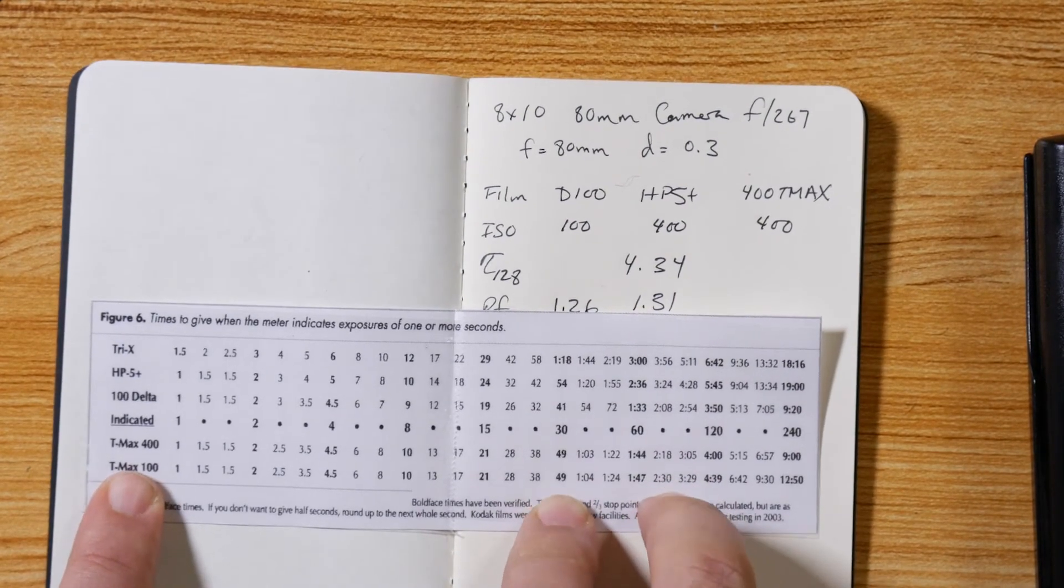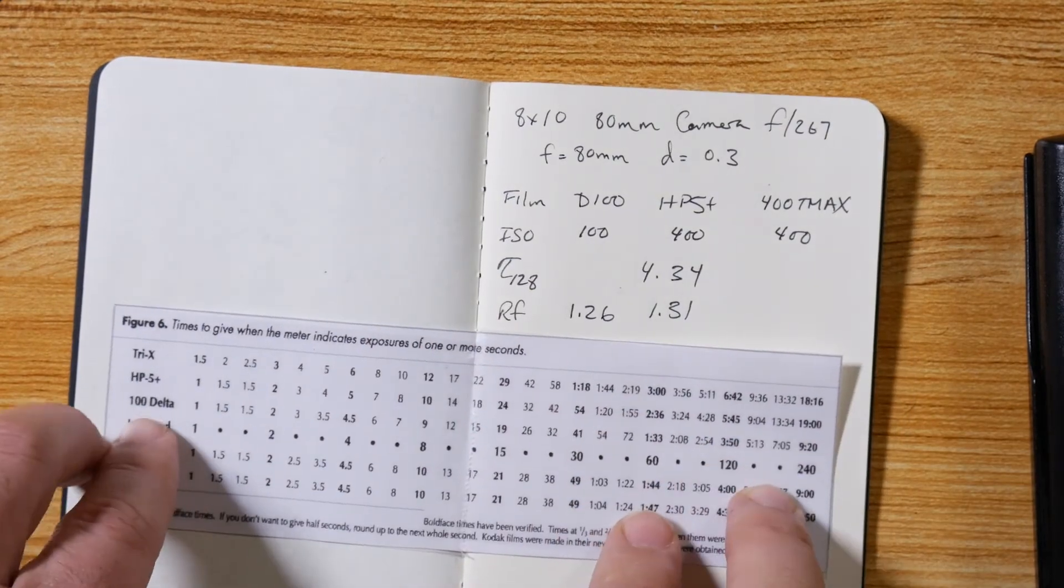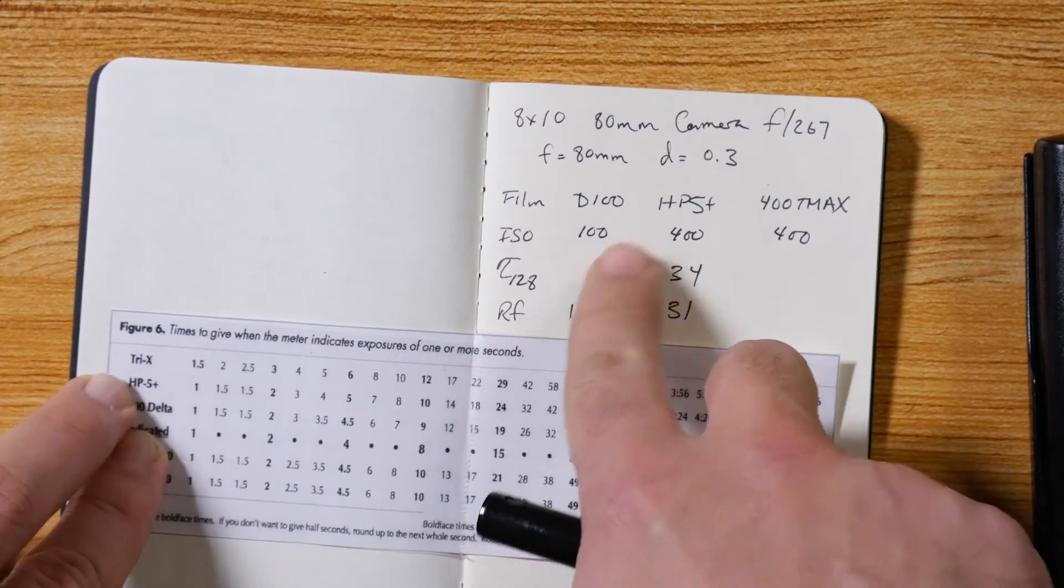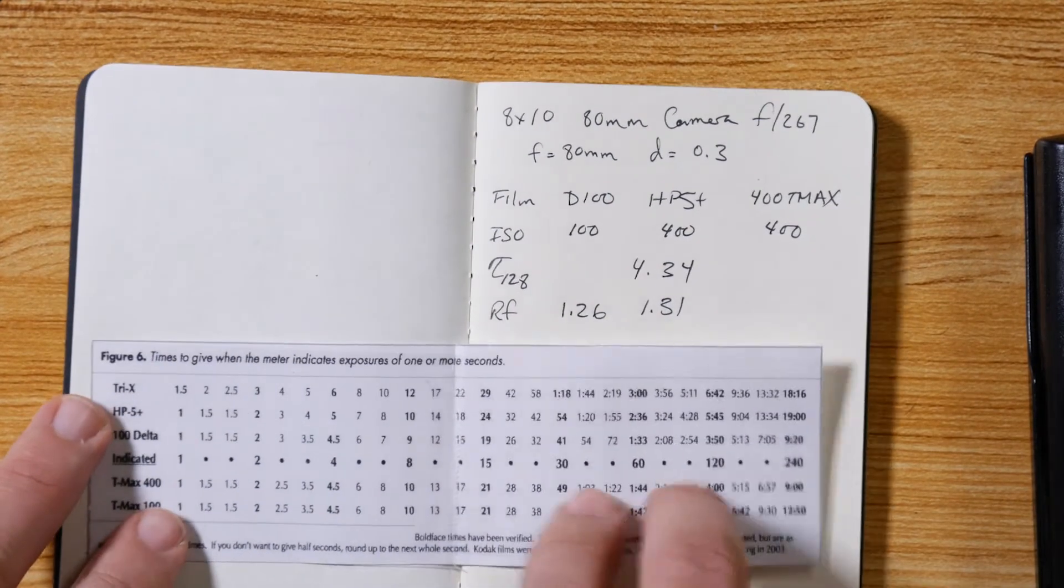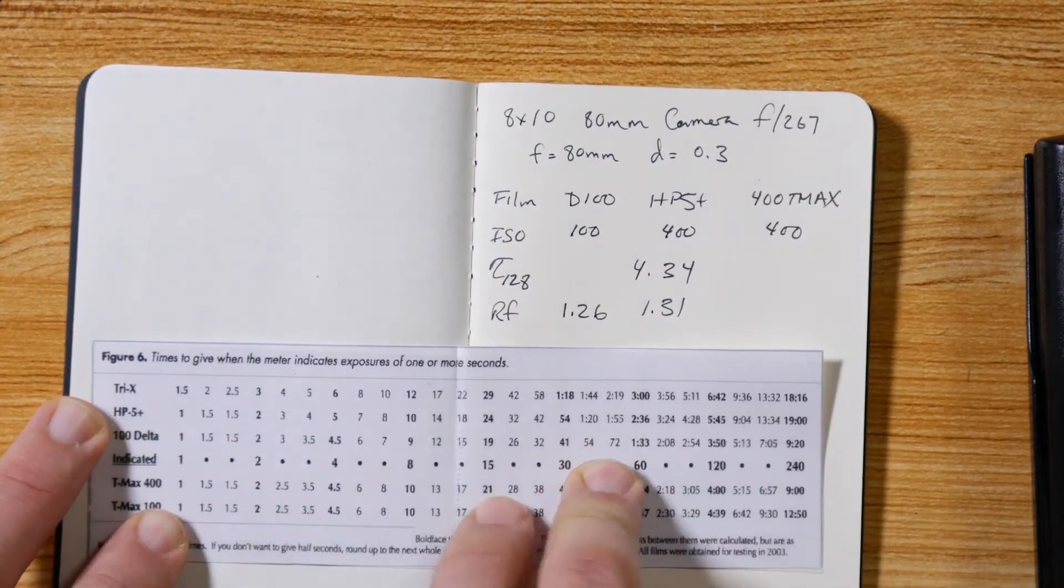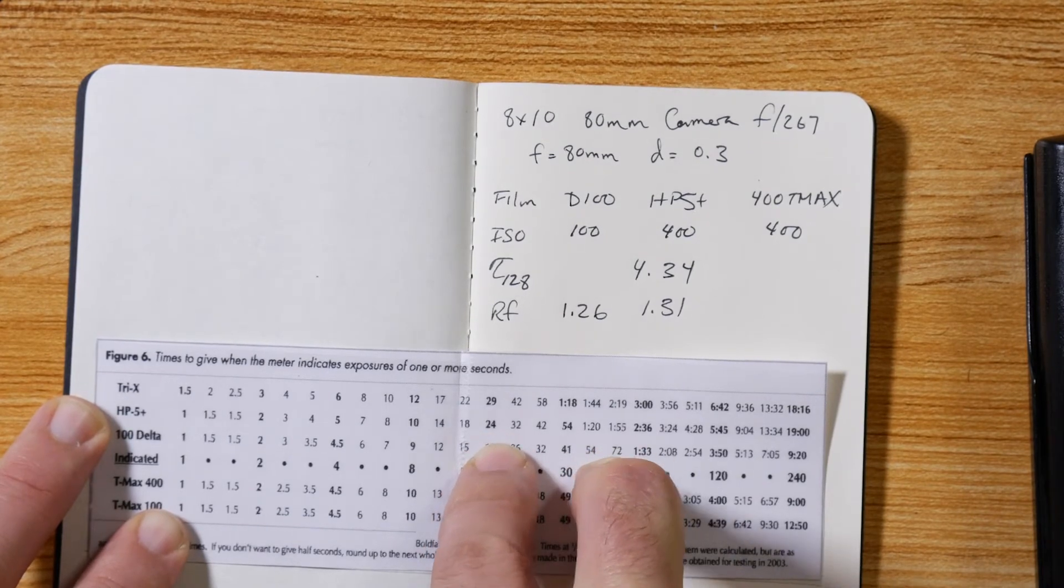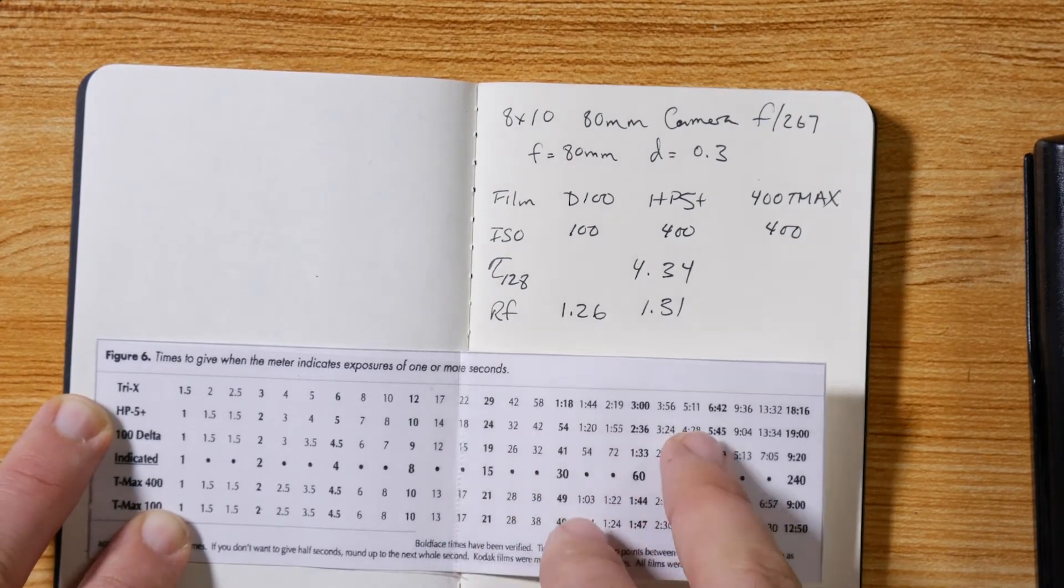You'll also notice that there are times for Delta and HP5, the other two films that I use. So maybe what I'll do is I'll do the calculation this way according to manufacturer, I'll do the little conversion here looking at the indicated time and the adjusted time from this table, find out if they agree.